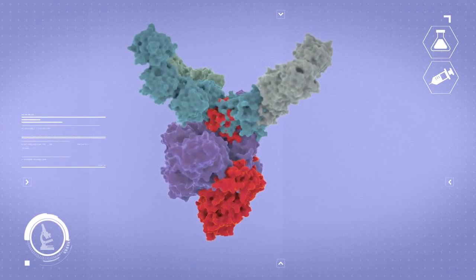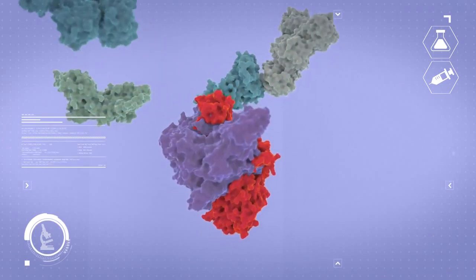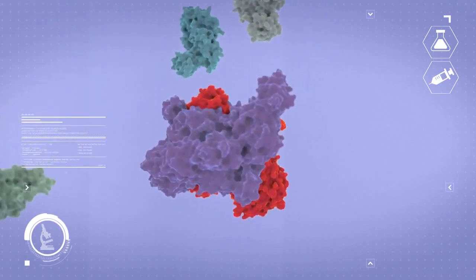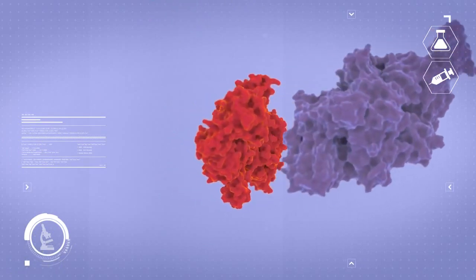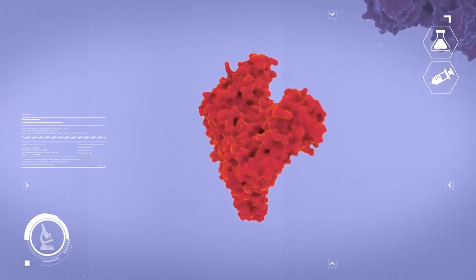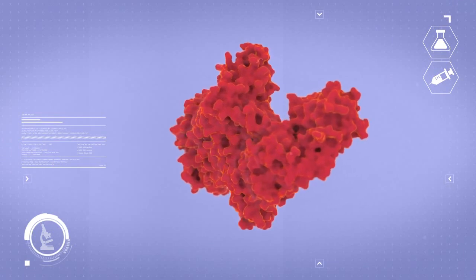The botulinum toxin A complexes dissociate very rapidly at neutral to basic pH values resulting in a 350 kilodalton neurotoxin and hemagglutinin and non-toxin non-hemagglutinin components.